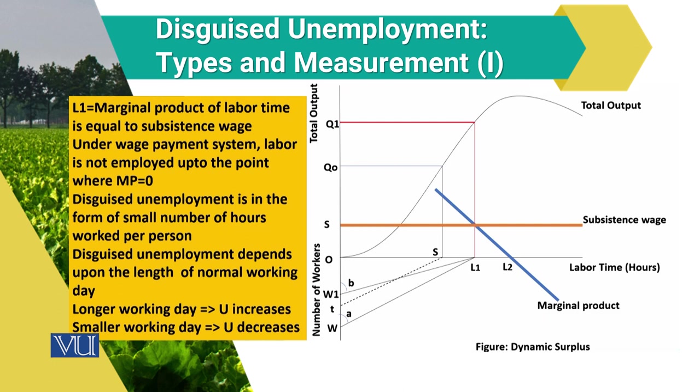In this diagram, we assume that labour will be employed up to the point where marginal product is equal to zero, so labour up to L2 labour time in hours will be used. But in a competitive market, labour is not hired up to the point where marginal product equals zero — labour is hired up to the wage level that prevails in the market. Under that situation, labour employed to carry out production is up to L1 labour time in hours.